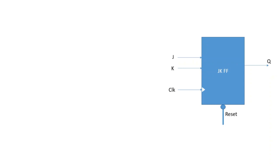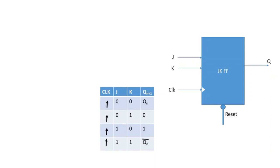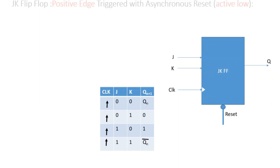This is the block diagram of our JK flip-flop which we have to realize using behavioral modeling in Verilog HDL. This is the truth table of JK flip-flop. When J and K are 0 there is no change. If J is 0 and K is 1 then Q should be 0. When J is 1 and K is 0 then Q should be high. And when both J and K are high then our output should toggle.